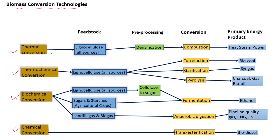In the thermal conversion process, the primary product is heat. The feedstock undergoes a pre-processing stage called densification, so that the densified product can then undergo combustion, producing heat as the primary output. This heat can further be used to produce steam, followed by power as a secondary product.